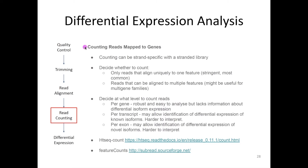If you have a strand-specific library, you can set your counting tool to also be strand-specific, which is always worth doing. You need to decide how you want to count your genes: per gene, which is robust and easy to analyze but doesn't tell you about differential isoforms; or per transcript or even per exon, which allows you to find out about differential isoform expression but is much harder to interpret and requires an assembly step. For this workflow, we're counting per gene. The two most common tools are HTSeqCount and FeatureCount, and the workflow you'll look at today uses HTSeqCount.